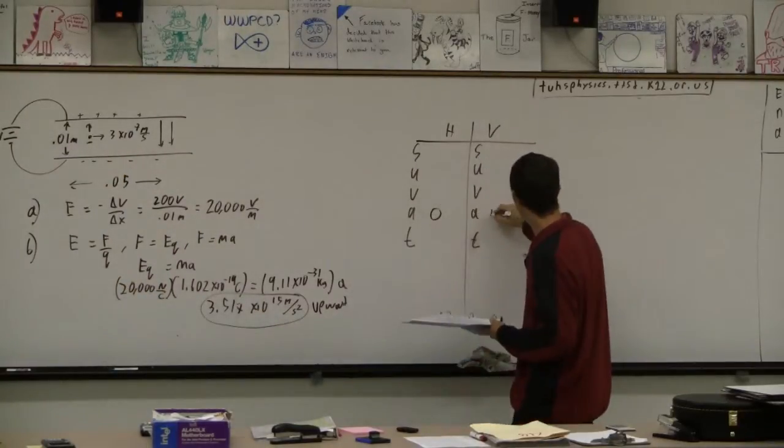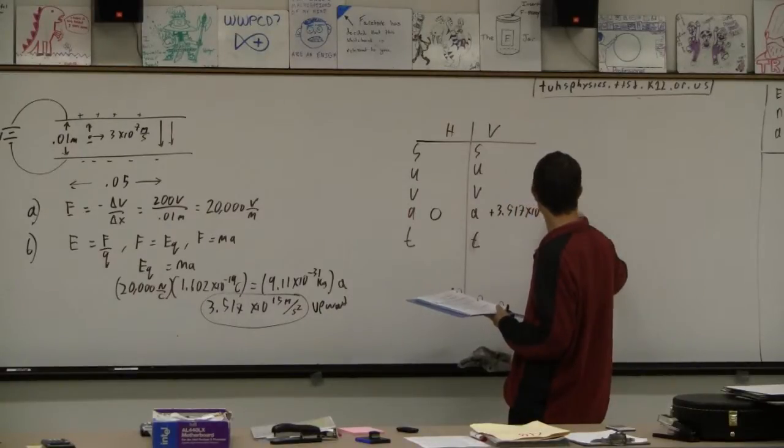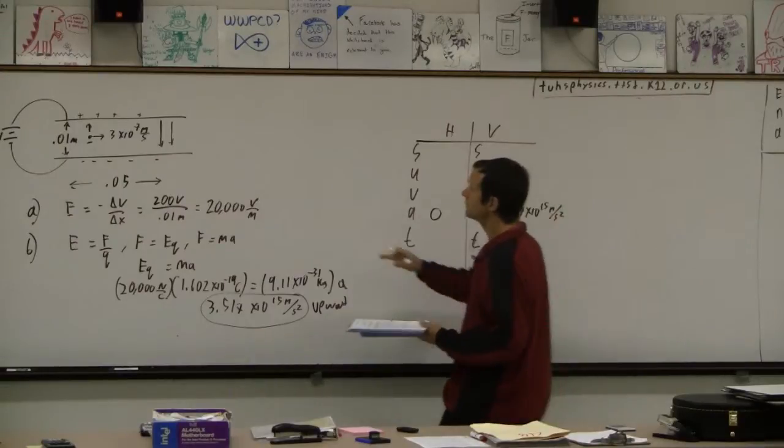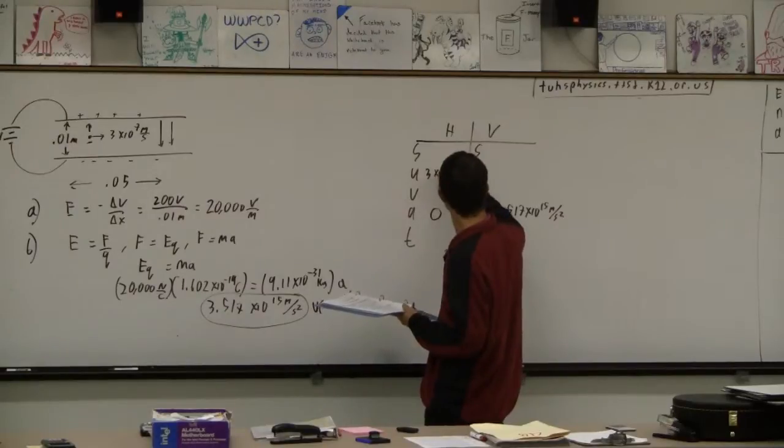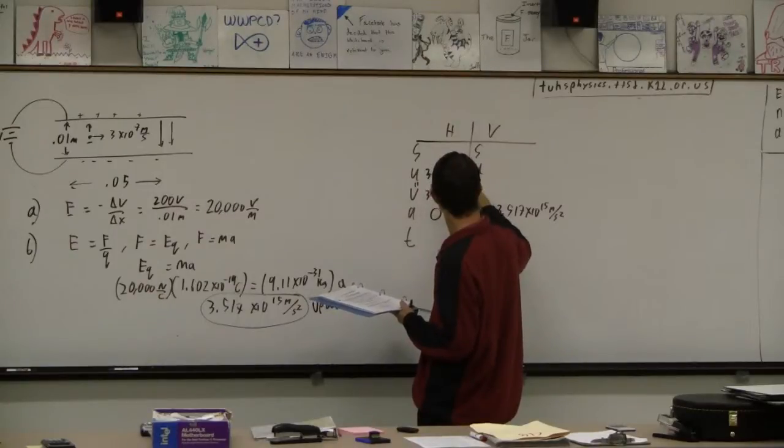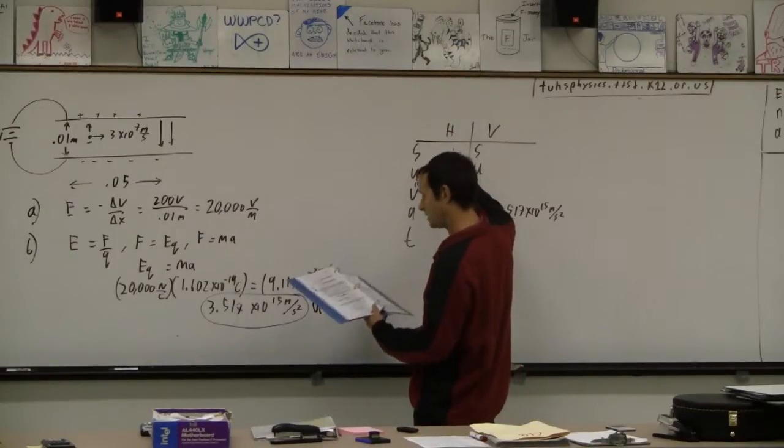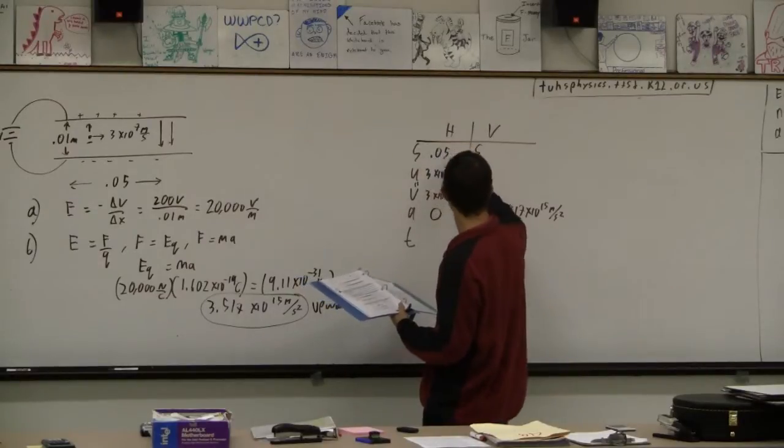Vertically though, it's accelerating at positive 3.517 times 10 to the 15th meters per second. This velocity, this 3 times 10 to the 7th, is our velocity here. And of course these guys are always equal, so it's 3 times 10 to the 7th meters per second. Horizontally we have to go 0.05 meters, which it's going to do that really fast.